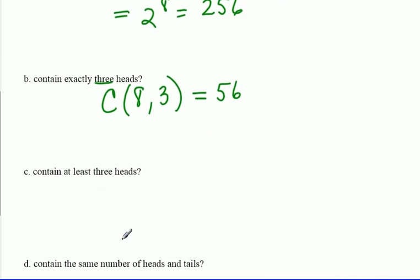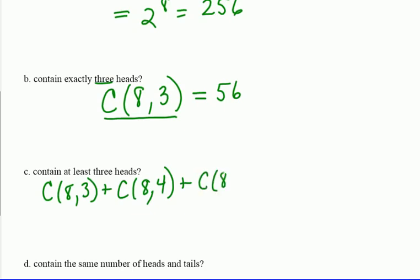Alright, at least three heads. Well, there are a couple ways we can think about this. The not so smart way to think about this is that, well, look, this was what we got for three heads, right? Again it's a combination. But at least three heads means that I could have three heads, four heads, five heads, six heads, all the way up to eight heads. So you could do it this way, what I call the not so smart way. You could say okay, well, C(8,3), C(8,4), C(8,5), and I could keep going all the way up to C(8,8) and figure out the combinations for each of those and add them together.